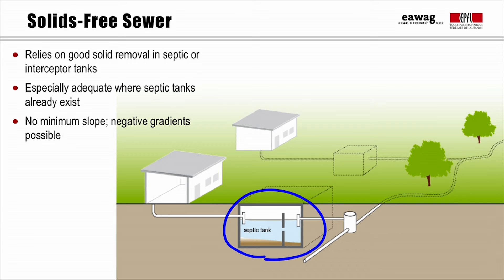A minimum diameter of 75 mm is required to facilitate cleaning. Stormwater must be excluded from this system. The critical point is of course not to let solids in — for that purpose, it is very important that the interceptors are regularly desludged. Solids-free sewers are the least expensive of all sewer systems. However, they require good training and acceptance by the users; otherwise, the risk of failure is high.